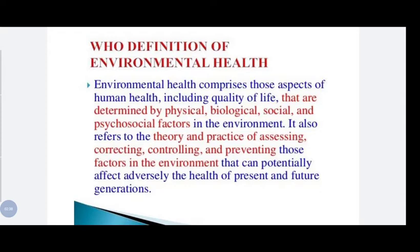So the aspects of human life including quality of life are determined by physical, biological, social and psychosocial factors present in the environment. It refers to the theory and practice of assessing how to correct, control and prevent factors that will affect the health of a person — whether in the present or in future generations. That is what environmental health means.